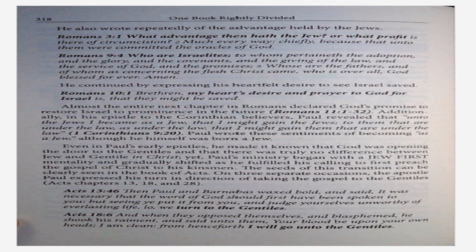He continued by expressing his heartfelt desire to see Israel saved. Romans 10:1 — Brethren, my heart's desire and prayer to God for Israel is that they might be saved. Almost the entire next chapter in Romans declared God's promise to restore Israel to the promise in the future — Romans 11:1-32. Additionally, in his epistle to the Corinthian believers, Paul revealed that under the Jews I became as a Jew, that I might gain the Jews. To them that are under the law, as under the law, that I might gain them that are under the law — 1 Corinthians 9:20. Paul wrote these sentiments of becoming as a Jew, although he himself was born a Jew. Even in Paul's early epistles, he made it known that God was opening the door to the Gentiles, and that there was truly no difference between Jew and Gentile in Christ. Yet Paul's ministry began with a Jew-first mentality and gradually shifted as he fulfilled his calling to first preach the gospel of Christ to his kinsmen.